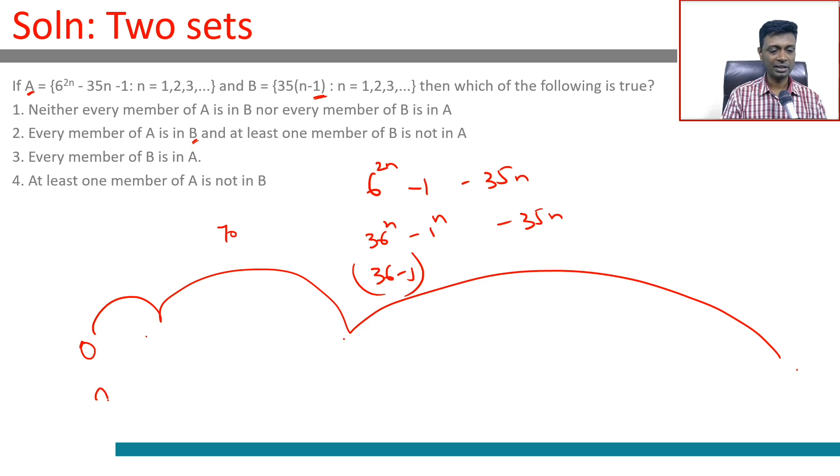B lists every multiple of 35, so B is a superset. A is contained within. Every element of A is in B, and at least one member of B is not in A. There are plenty of members in B not in A.